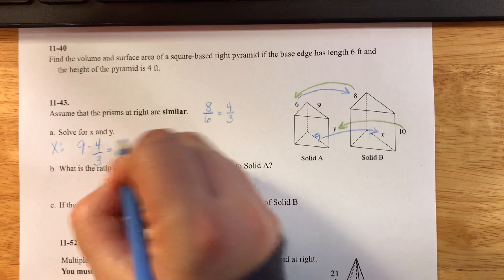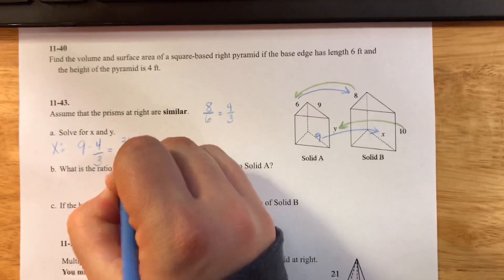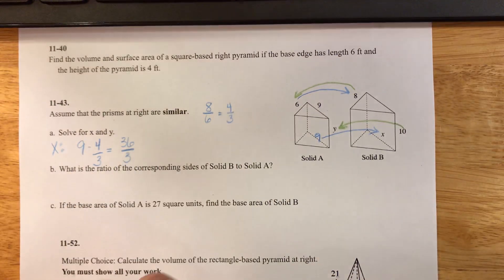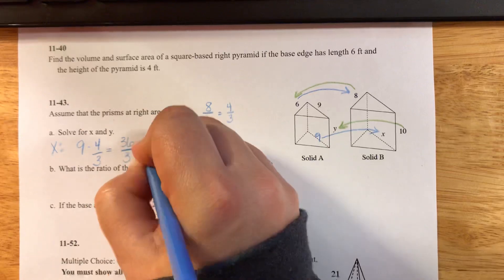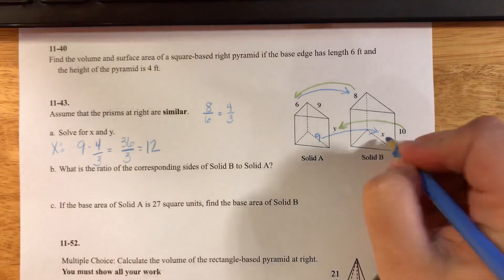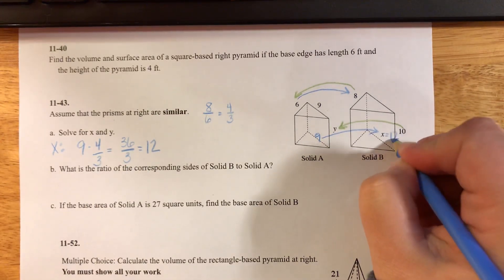When I do that, I can multiply across the top and get 36. The bottom stays 3, and then if I divide that out, I get 12. So that means that x equals 12.